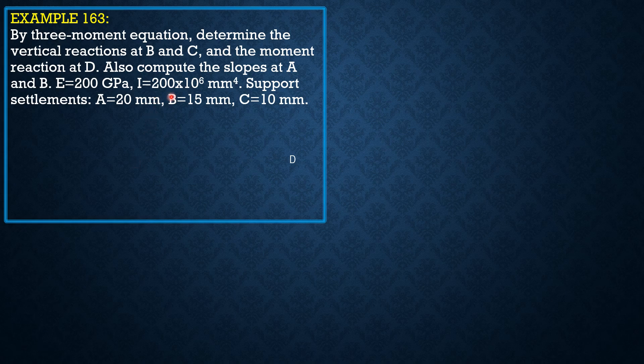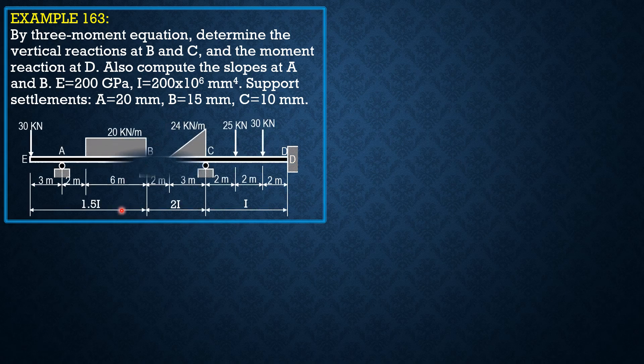Moment of inertia I, as indicated, is 200 times 10 to the 6 mm to the 4th. Support settlements at A: 20 mm, B: 15 mm, and C: 10 mm. And here is the beam.